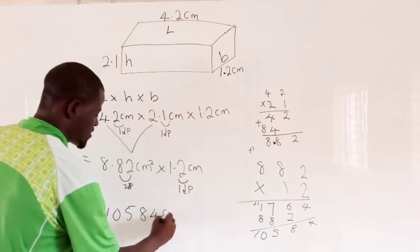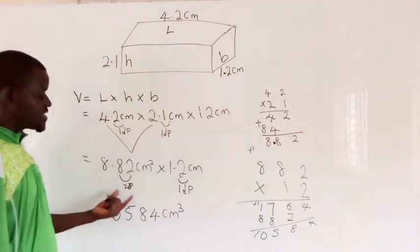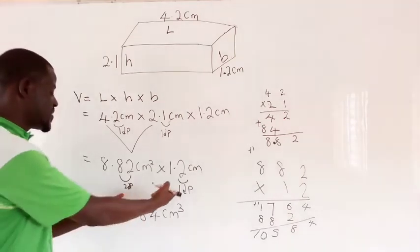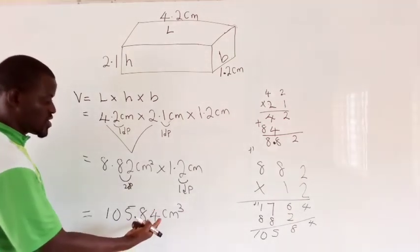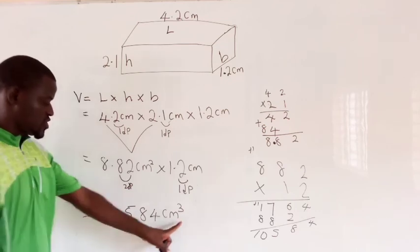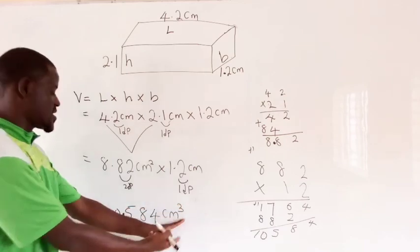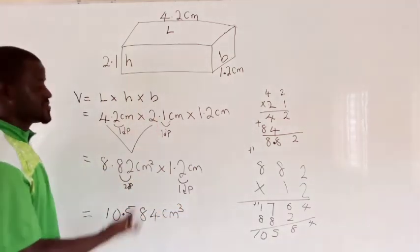Remember, our final answer is supposed to be in 3 decimal places. So we count 3 numbers back: 1, 2, 3. So that's 10.584 cubic cm. Here is square cm, here is square cm times cm, you have cubic cm. So this is it.